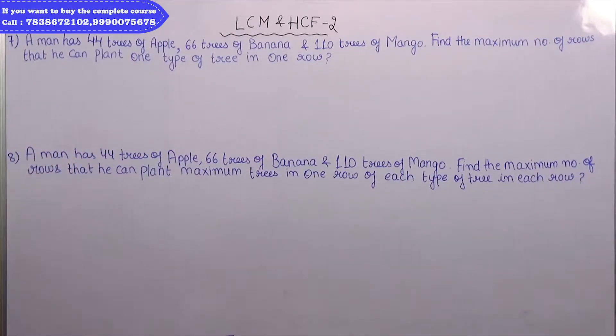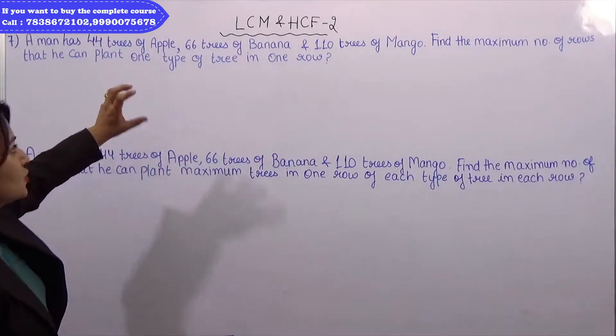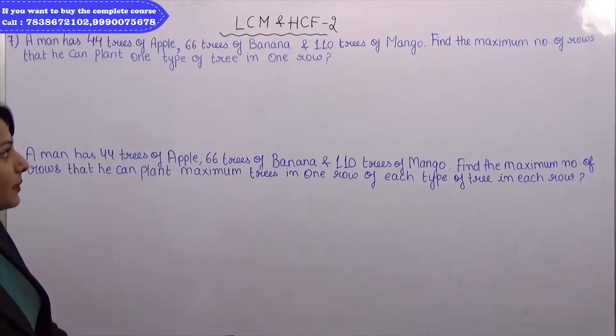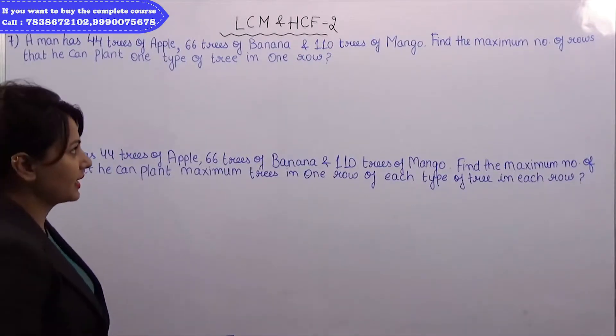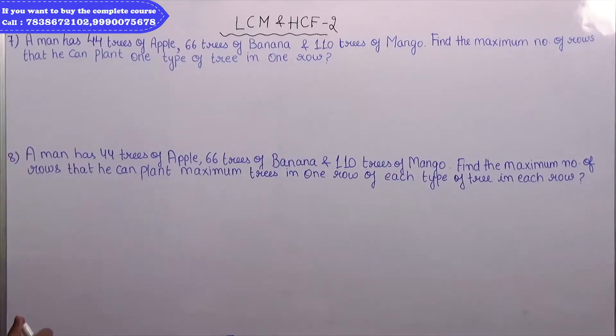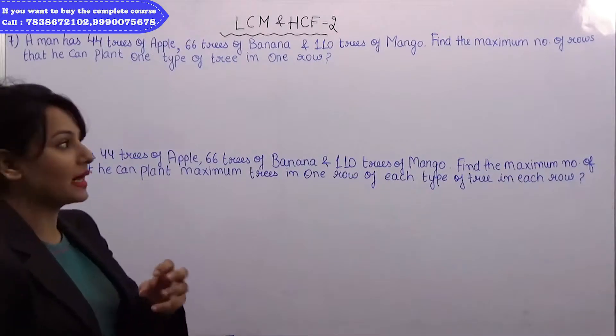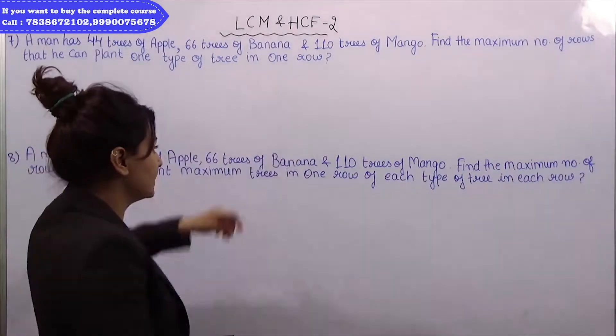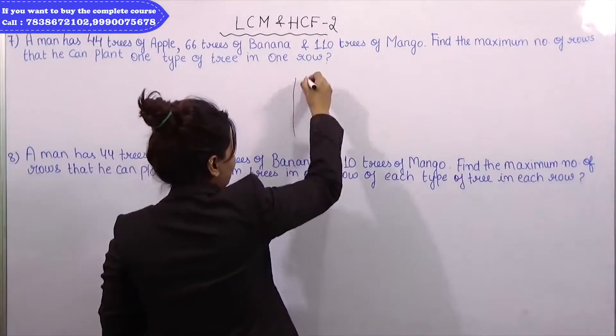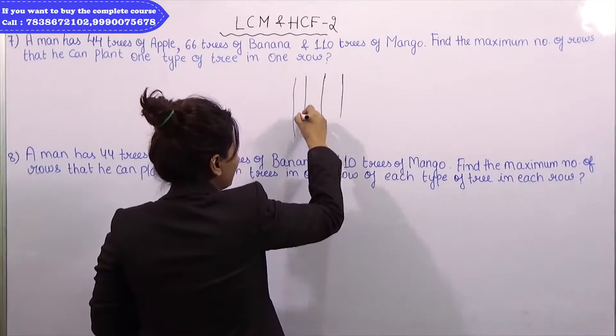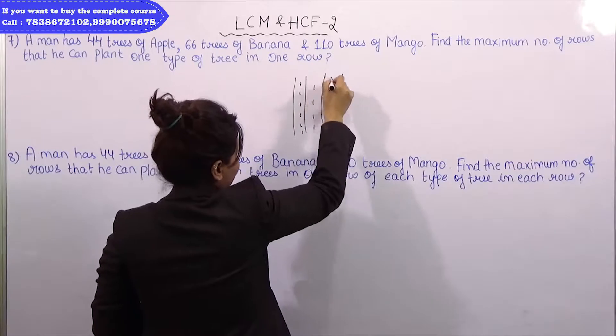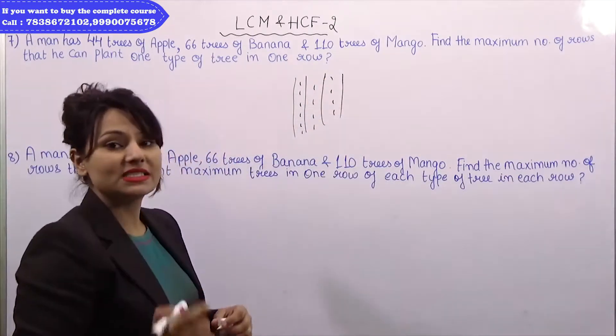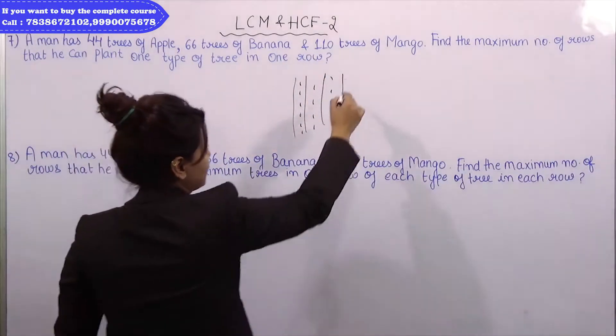A man has 44 trees of apple, 66 trees of banana and 110 trees of mango. So the maximum numbers, the most important thing is to tell the rows. The rows can be applied to one type of tree in one row. So tell us about the maximum rows.